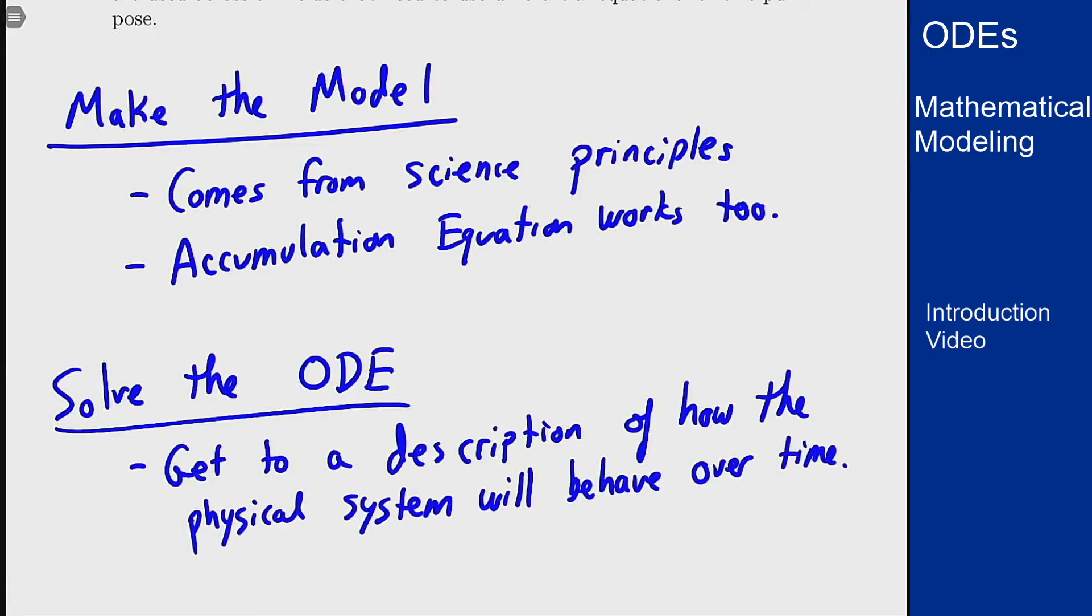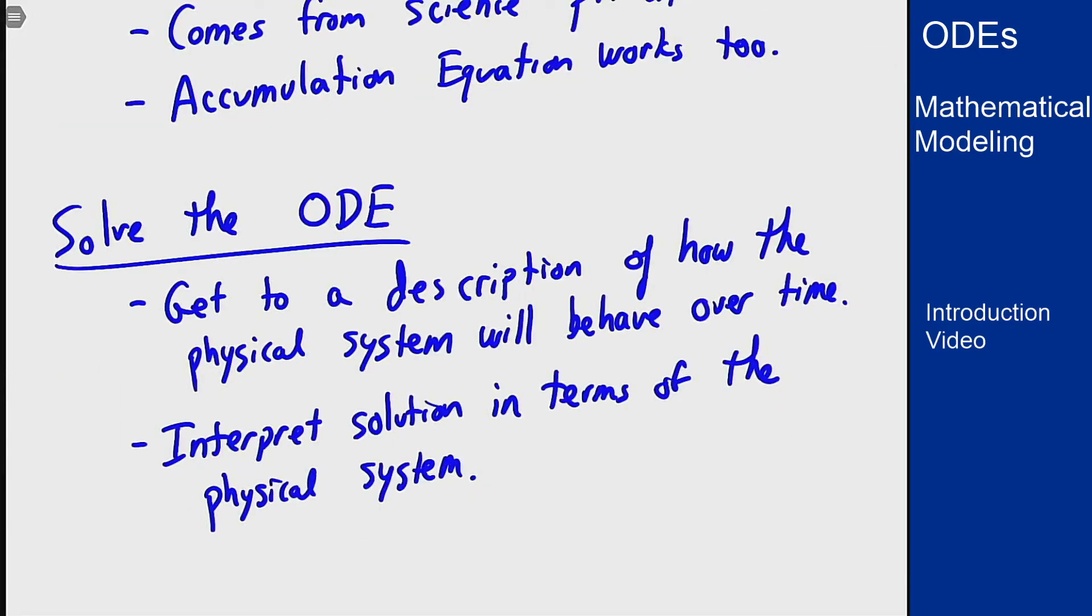This process also involves being able to interpret the results you get from the differential equation solution in the context of the physical system you started with. There are certain questions you want to ask about the physical system, how is it represented in terms of the mathematical solution to the differential equation, and how can you take your solution and interpret it to get to the answer you want to actually get to.